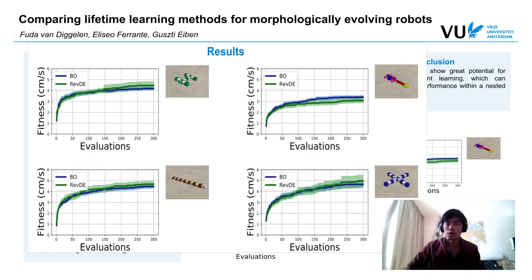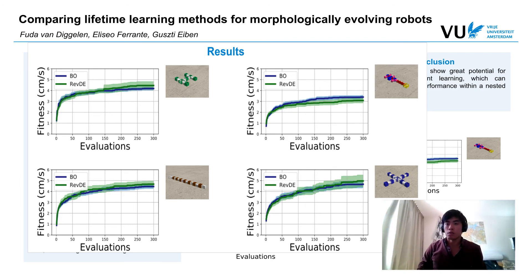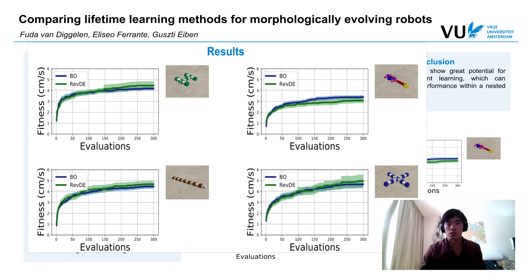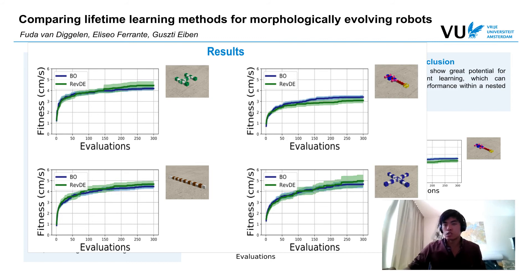As you can see in the results, both Bayesian optimization and reversible differential evolution were capable of performing very well very rapidly. This means that learning seems to be very efficient and could even be shortened to 200 evaluations to get similar performance, and that this performance seems to be very independent of the morphology it was applied to.